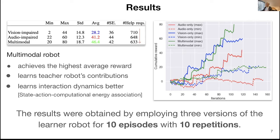To show the behavior of all learner robots in one graph, we draw this figure, depicting the best and worst rounds for each robot. The best rounds are shown with solid lines and the worst rounds with dashed lines. It can be seen that the multimodal learner robot, shown with the green curve, performs better compared to the other learner robots.